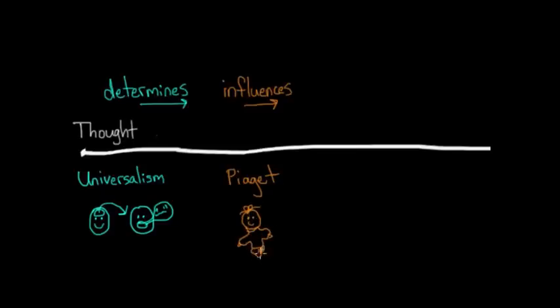For example, when children learn that objects continue to exist even though they can't see them, that's when they start to develop words like gone, missing, and find. Their language development is influenced by their cognitive development and their newly discovered ability to understand that objects exist even when they can't see them anymore.